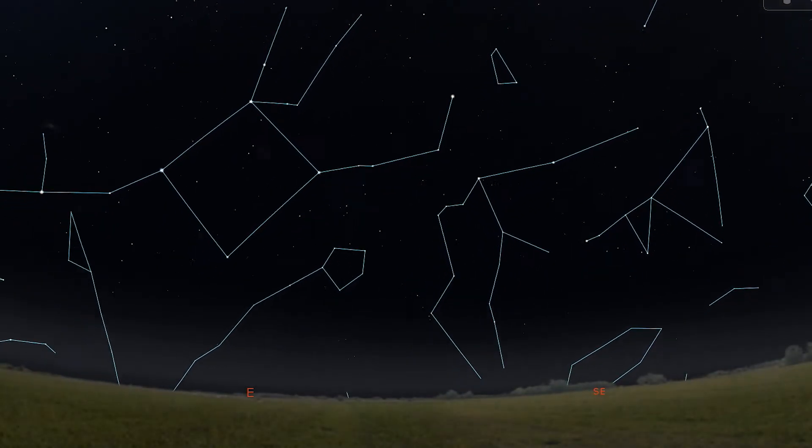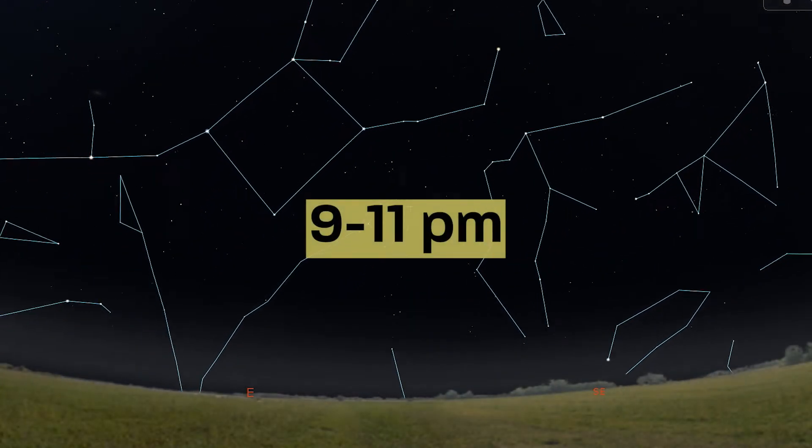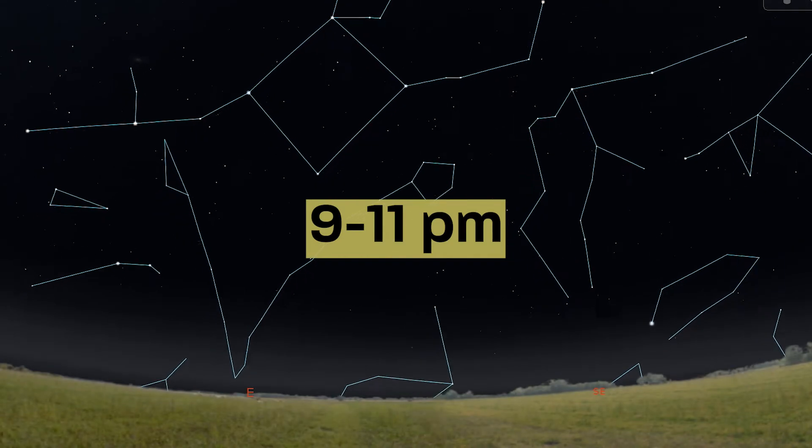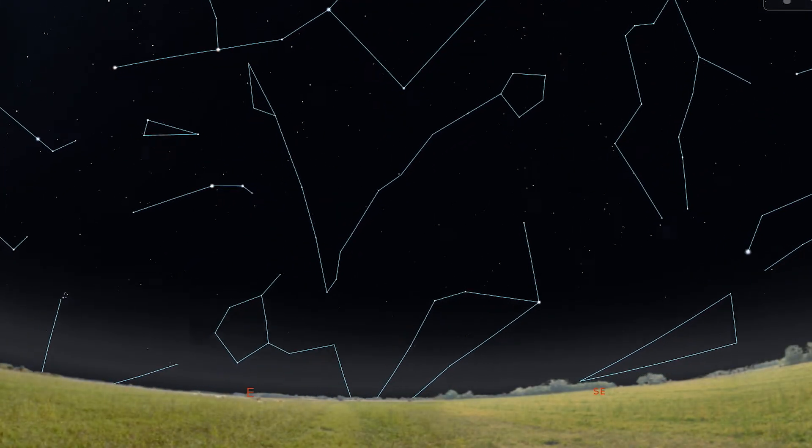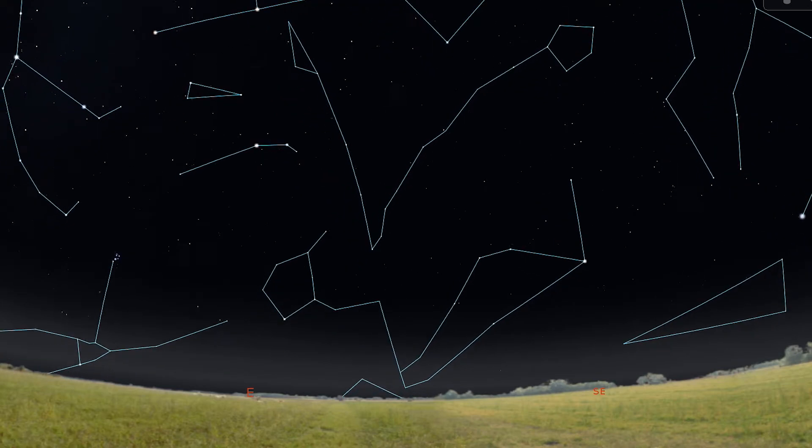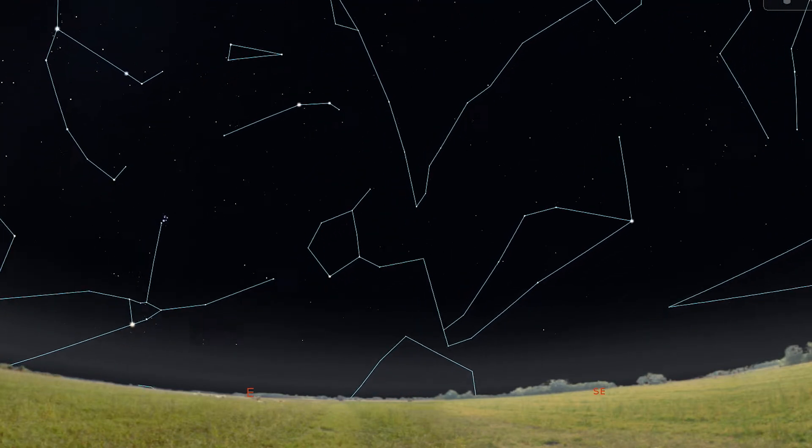I do most of my stargazing between the hours of 9 and 11, or sometimes even earlier during the winter months. If you want to easily find Auriga during the evening hours, look for it in the winter or early spring.